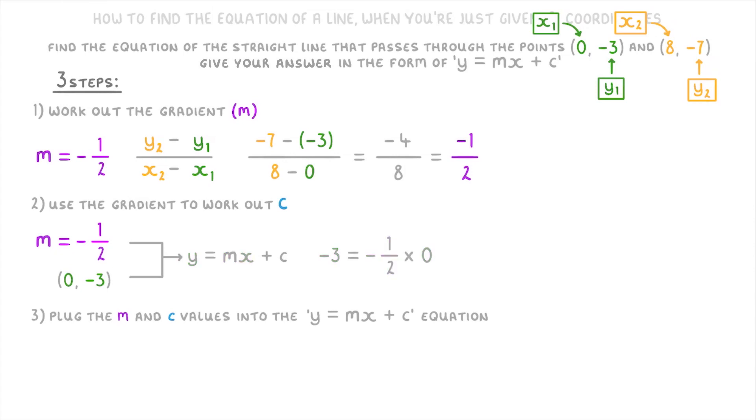And as -1/2 times 0 is just 0, that part will cancel out leaving us with just -3 = c. So now that we've found m and c, all you have to do is plug them into a new y = mx + c equation.